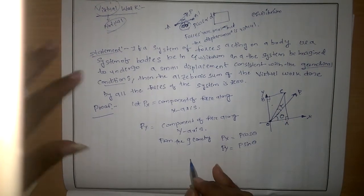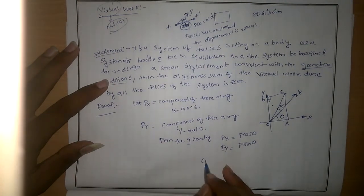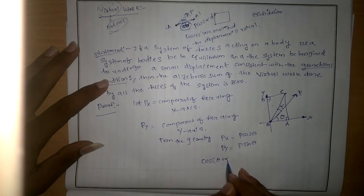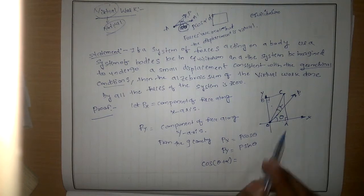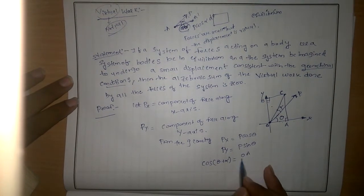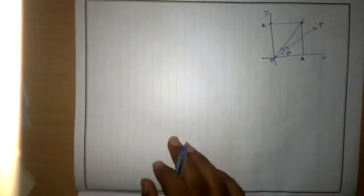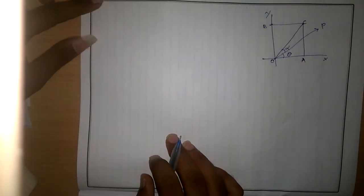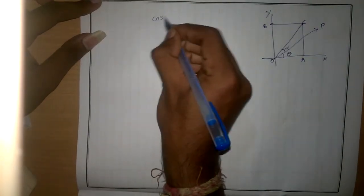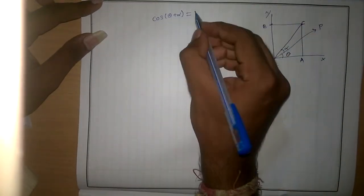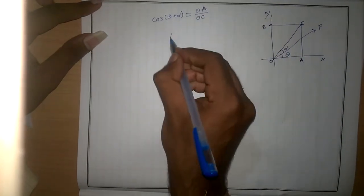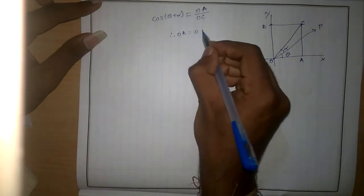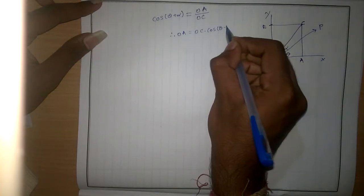From the geometry, we can find cos of (theta + alpha). Cos(theta + alpha) equals adjacent side by hypotenuse, where the adjacent side is OA and the hypotenuse is OC. Therefore, OA = OC · cos(theta + alpha).